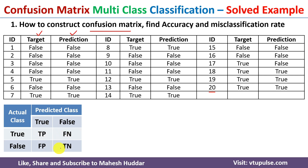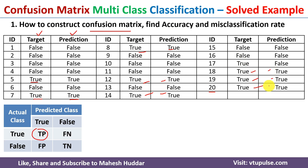We need to find all these values and then calculate the different performance metrics. True positive means the actual class is true and the predicted class is true. Counting through the data, we find 8 examples where the actual class is true and the predicted class is true. So the total number of true positives is 8.